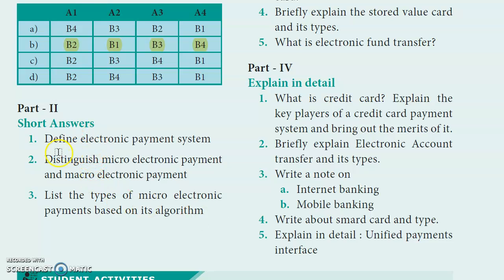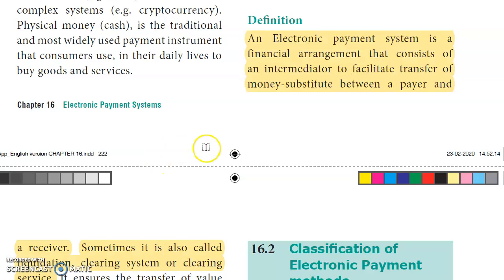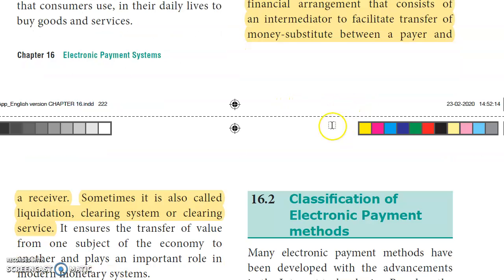Part 2 answers. First question: Define electronic payment system. Page 222: An electronic payment system is a financial arrangement that consists of an intermediary to facilitate transfer of money or money substitute between a payer and a receiver. Sometimes it is also called a liquidation clearing system or clearing service.